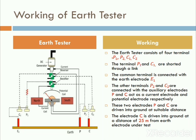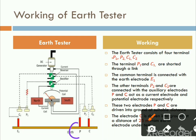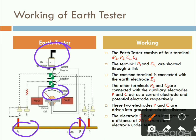Second point: again fix the electrode P at a distance of 3 to 4 meters near to the earth electrode and calculate the resistance. Fix P at 3-4 meters from the earth electrode, then start the DC generator by rotating the handle, and the resistance value can be read from the scale.